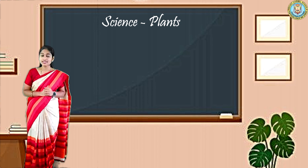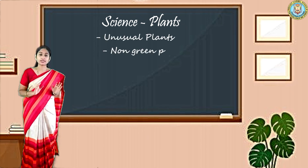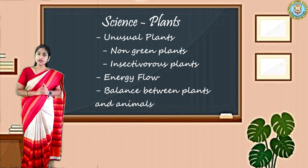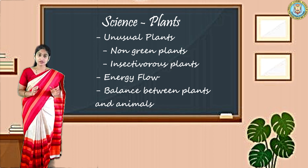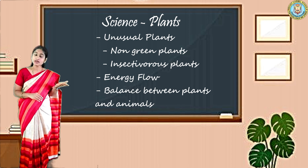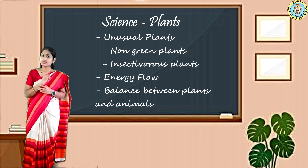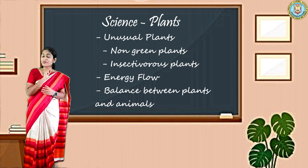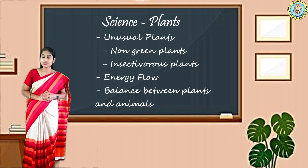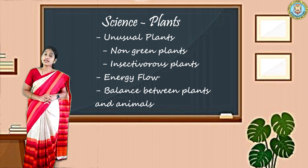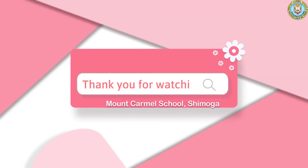So today, my dear students, in this class what we have learnt: we learned about some unusual plants — some plants don't have all the parts of a plant, some non-green plants like fungus and mushroom, and some insectivorous plants like Venus flytrap and pitcher plant that trap insects. We also learned about energy flow and the balance between plants and animals. In the next class we will revise some processes and do some exercises on this lesson. Thank you.